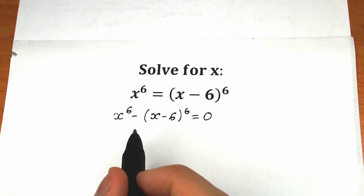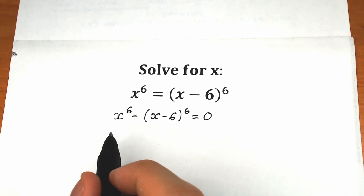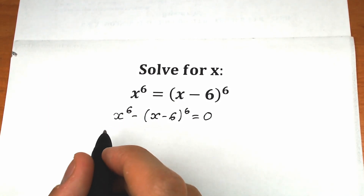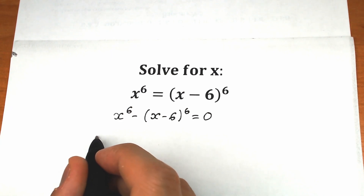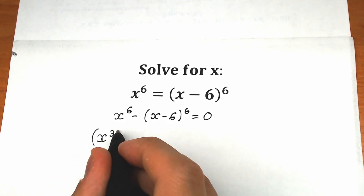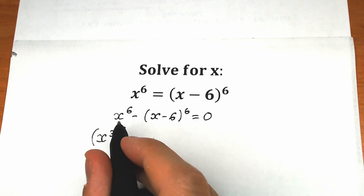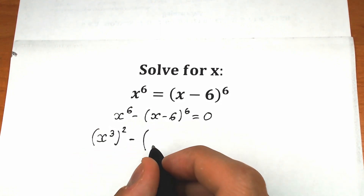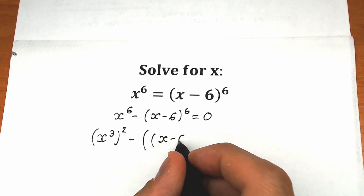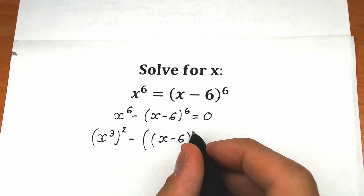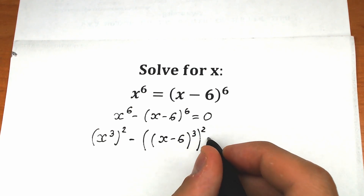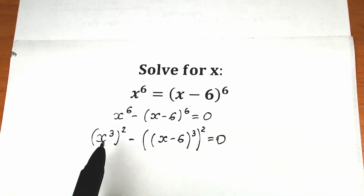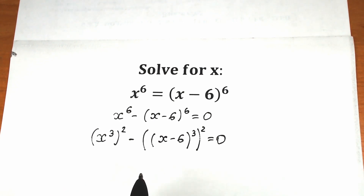Right now let's rewrite x to the sixth power as x cubed, all to the second power. And let's do absolutely the same thing with the other term, writing it as x minus six, all cubed, to the second power. This changes nothing — we have exactly the same expression — but now we can recognize the difference of two squares.